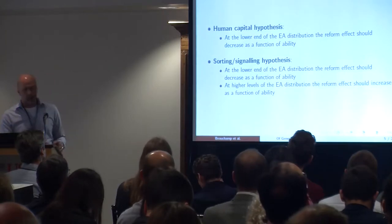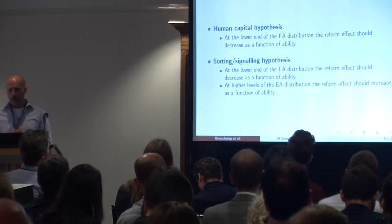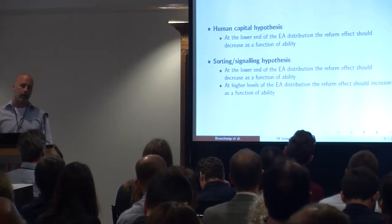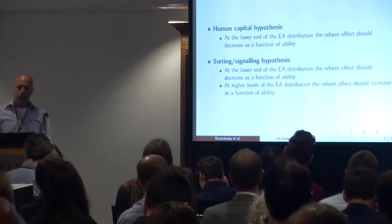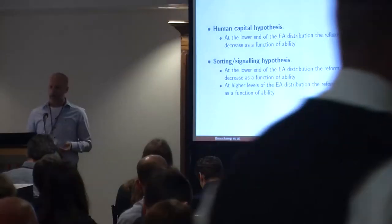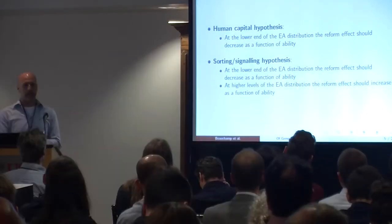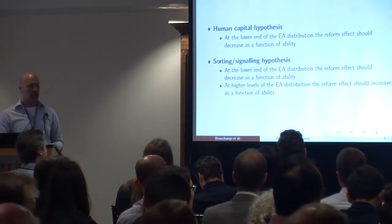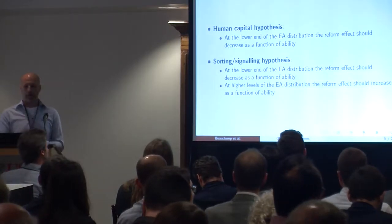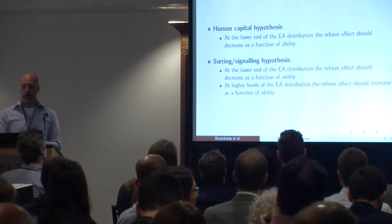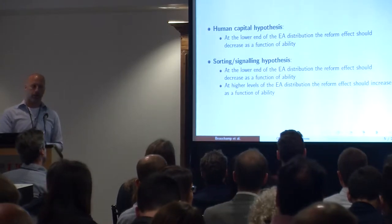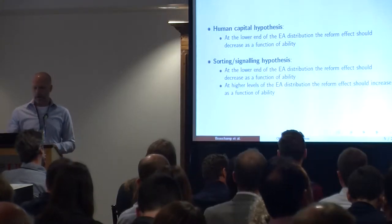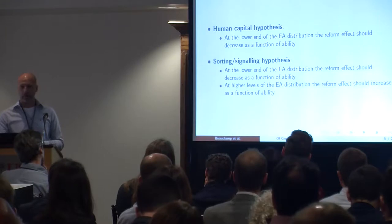This slide summarizes the differing empirical implications of these two hypotheses. For both, we should expect the reform effect to decrease dysfunctional mobility at the lower end of the education distribution. For the signaling hypothesis, we should also expect the reform effect to increase dysfunctional mobility at higher levels of the education distribution.